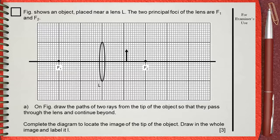On figure, draw the paths of two rays from the tip of the object so that they pass through the lens and continue beyond. Complete the diagram to locate the image of the tip of the object. Draw in the whole image and label it I.